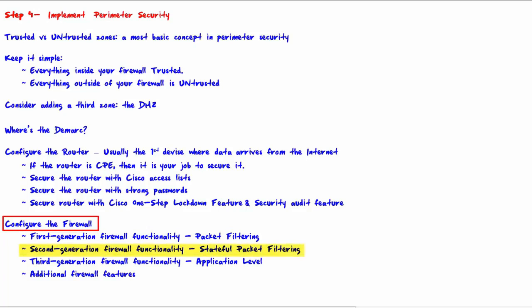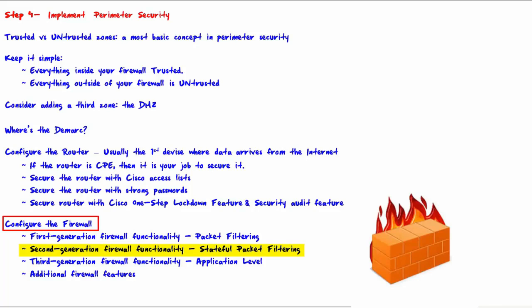Second-generation firewall functionality is stateful packet filtering. This occurs at layers 1, 2, 3, and 4 of the OSI reference model. The addition of layer 4 — the transport layer — allows the use of connection state. The firewall will record all connections passing through it and determines if any packet is part of an existing connection, the start of a new connection, or not part of any connection at all.